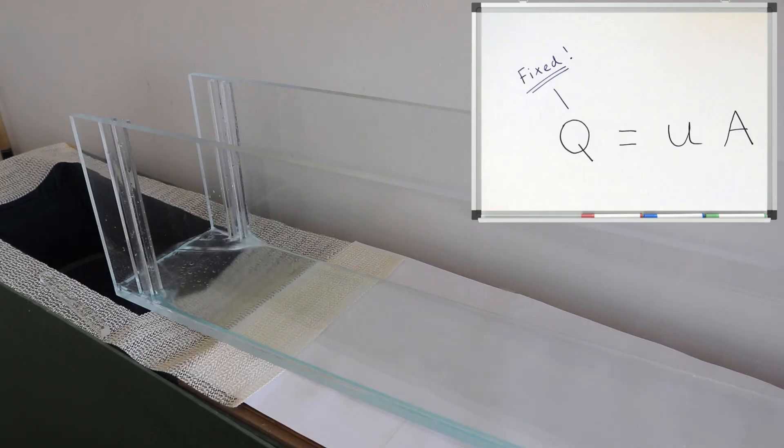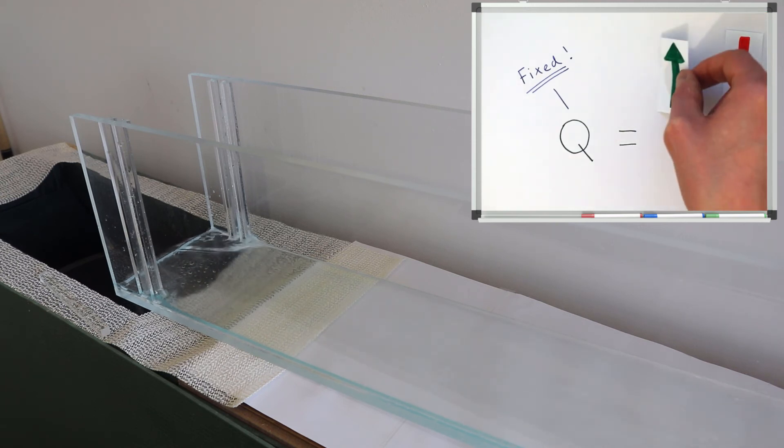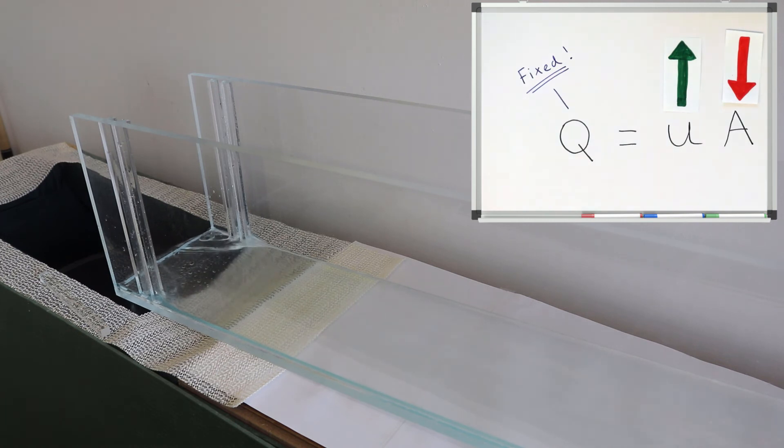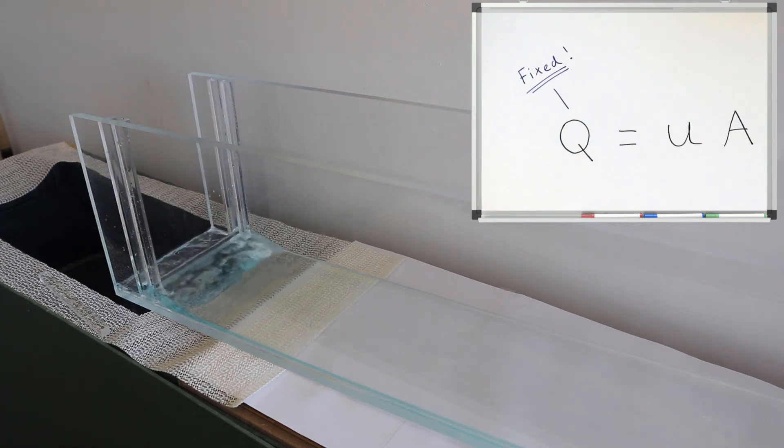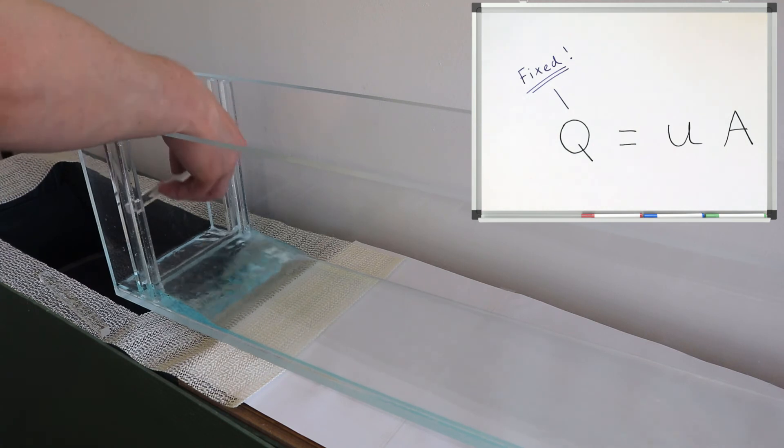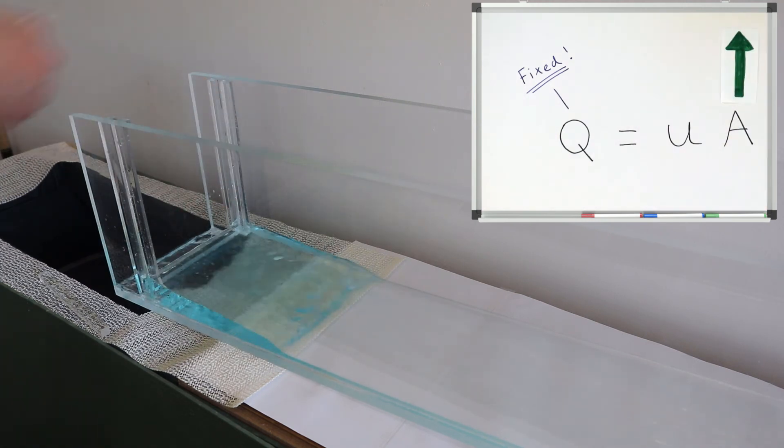Or if we consider the flume flowing unconstrained, we can see that the area is quite low and the velocity is quite high. But if I build a weir at the downstream end, this forces the area of the flow to increase, which in turn forces the velocity to decrease to conserve discharge.